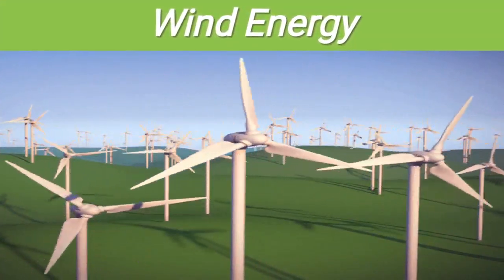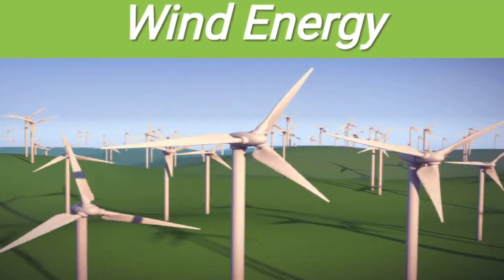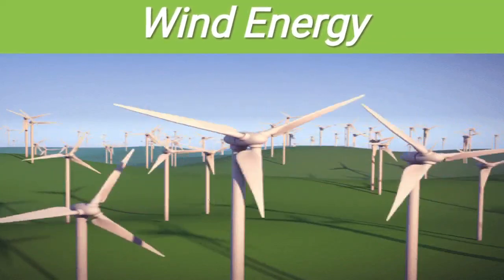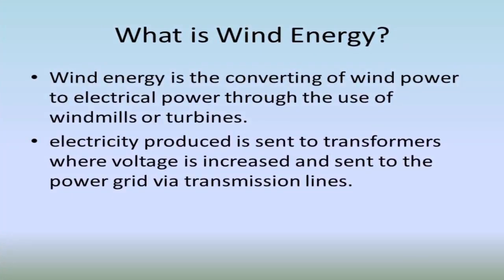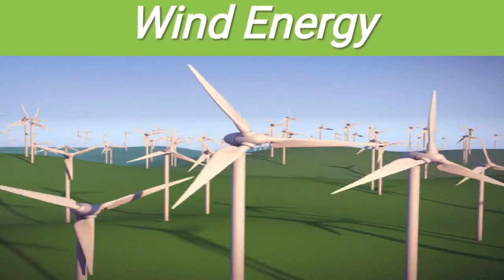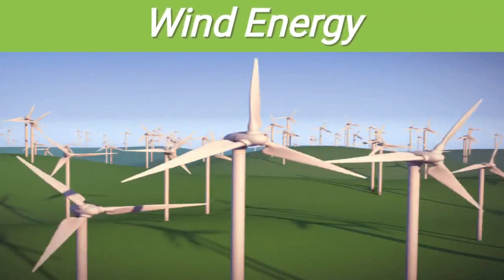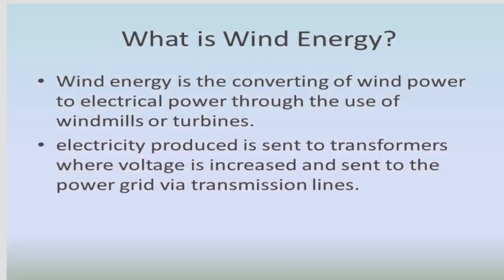Look at this picture — can you see the windmills rotating on your screen? The energy of wind is used to generate electricity through turbines. Wind energy is the converting of wind power to electrical power through the use of windmills or turbines. When the windmills spin fast due to wind speed, that motion is converted into electricity used in homes and other places.